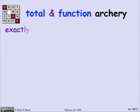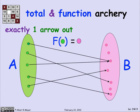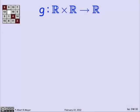So total and function means that there's exactly one arrow out. And that's probably the most familiar case of functions. In lots of fields, it's assumed that functions are total. But the truth is that there often is not total, and people aren't careful about it.